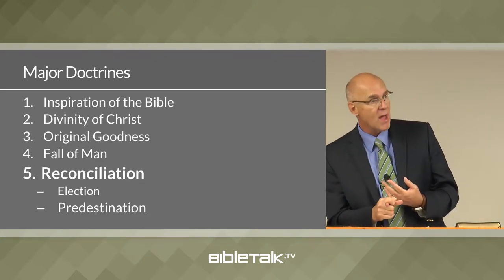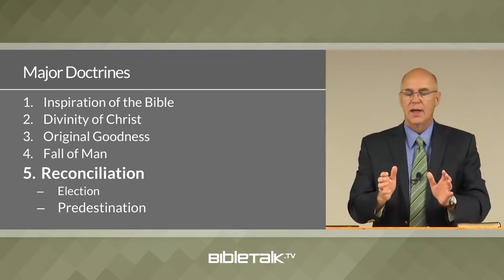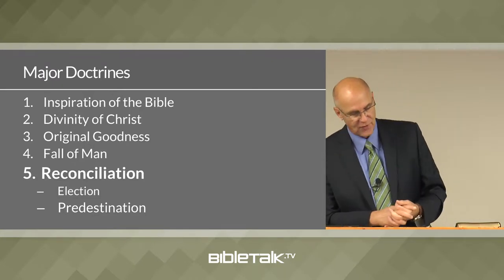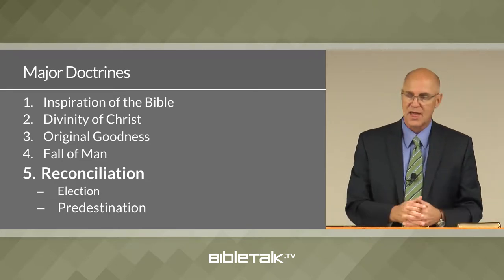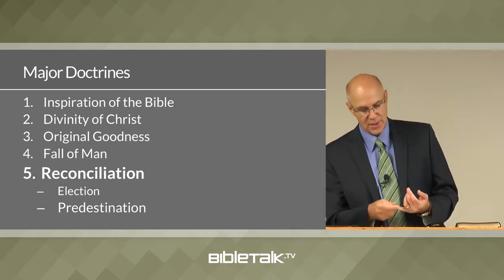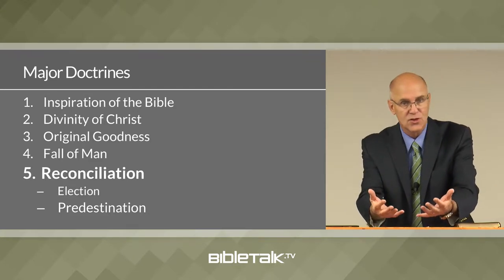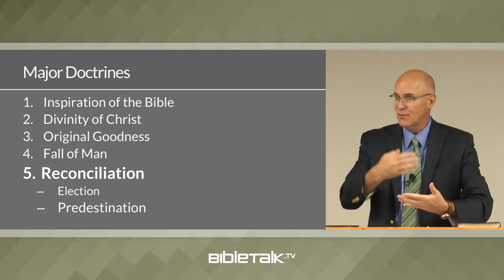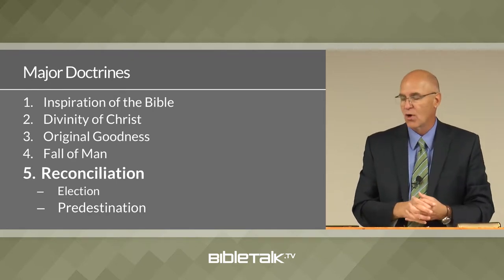The fourth doctrine is the fall of man. Man fell because of his disobedience — God set a dividing line, and the thing man couldn't do was eat from the tree of the knowledge of good and evil. Man crossed that line and fell, with all the consequences that came with it. The fifth doctrine, the one we're really talking about today, is the doctrine of reconciliation — God, because He is a God of love, desires to bring man back into fellowship with Himself. The ten sub-doctrines explain how God accomplished this work of reconciliation.